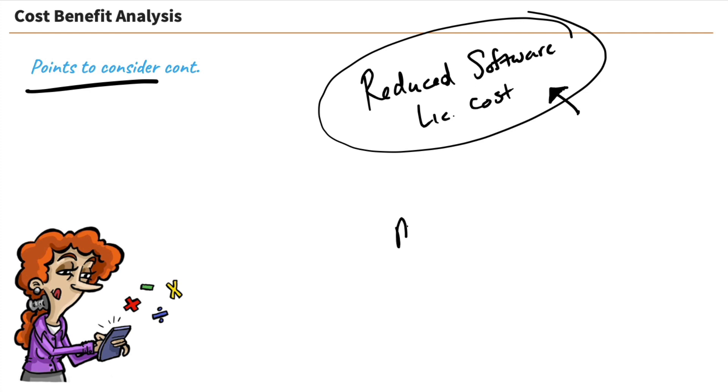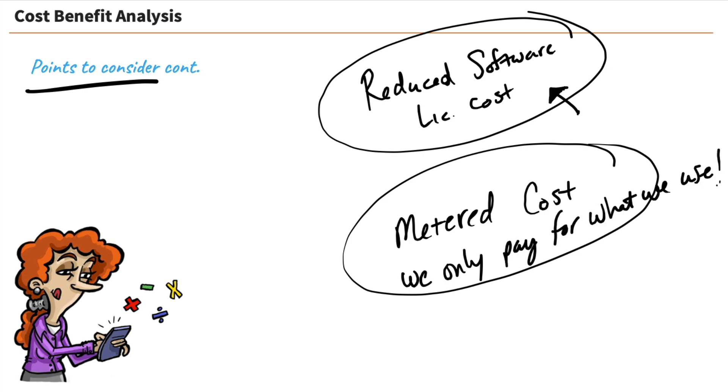And then lastly, in the cloud, we are in a metered cost infrastructure, which of course means we only pay for what we use. Whereas if we purchase a server infrastructure and we put on site, we've got all these servers that we've purchased for on premise. And if we're only using 40% of their capabilities or their resources, we're still paying for 100% of it. Whereas in the cloud, we only pay for what we use. So it is very cost effective.